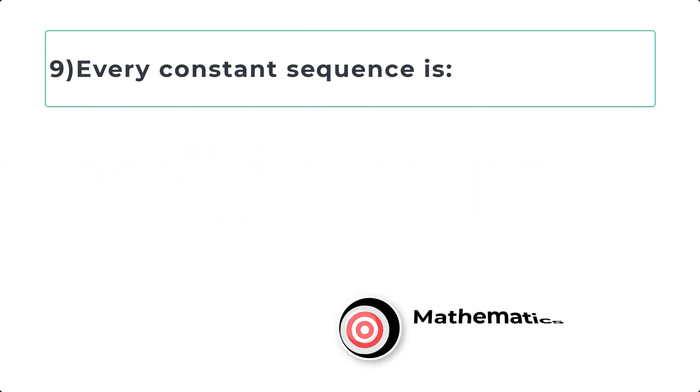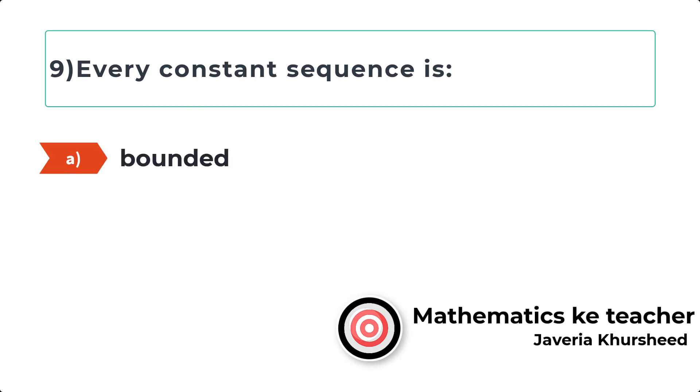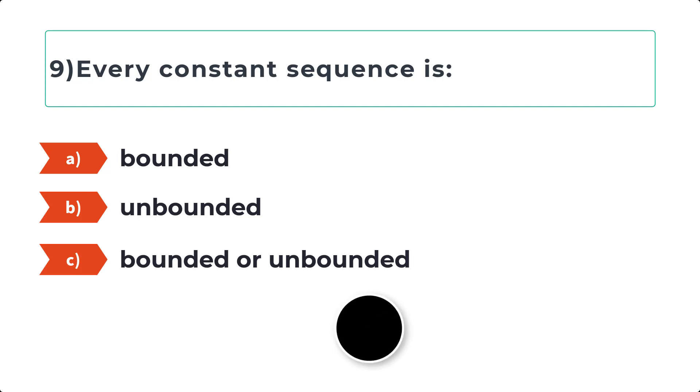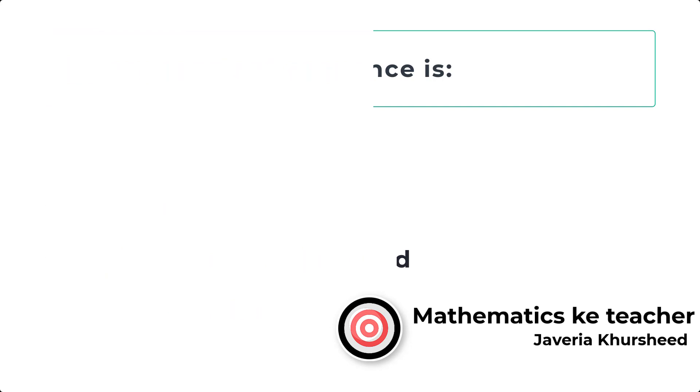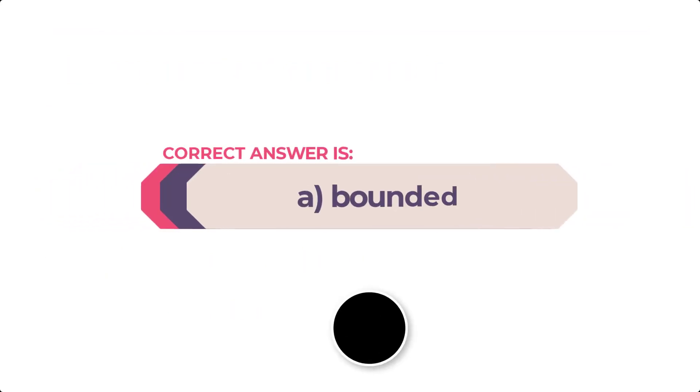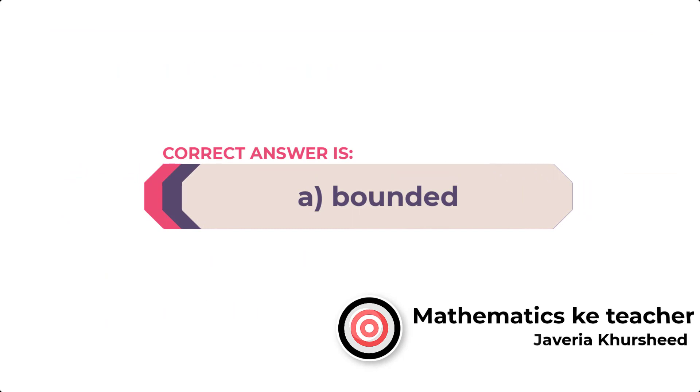Question 9: Every constant sequence is: A) Bounded, B) Unbounded, C) Bounded or unbounded, D) None of these. Correct option is A, bounded.